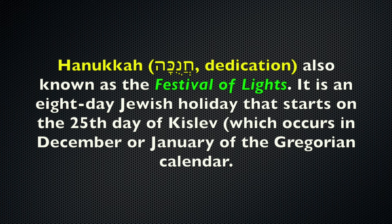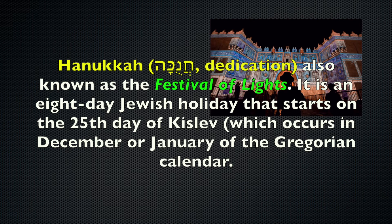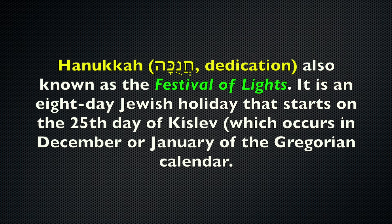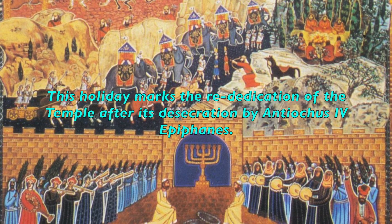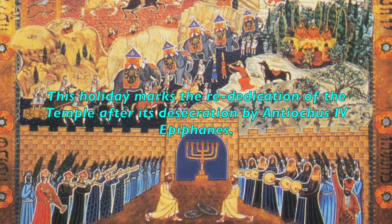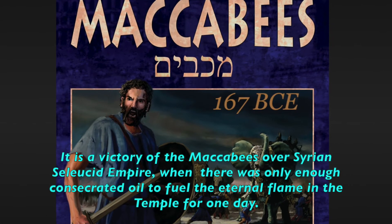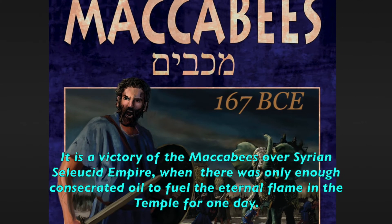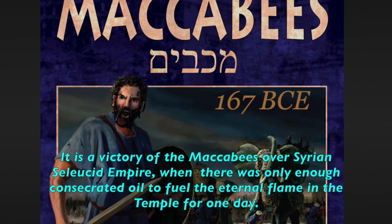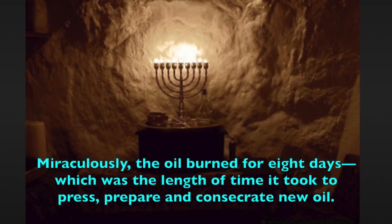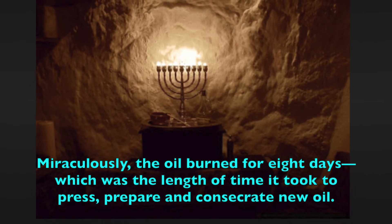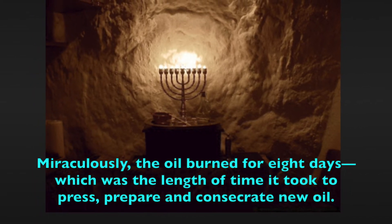Hanukkah, meaning dedication in English, is also known as the festival of lights. It is an eight-day Jewish holiday starting on the 25th day of Kislev, occurring in December or January of the Gregorian calendar. It marks the rededication of the temple after its desecration by Antiochus IV Epiphanes. Spiritually, Hanukkah commemorates the miracle of the oil — a victory of the Maccabees over the Syrian Seleucid Empire, when there was only enough consecrated oil to fuel the eternal flame in the temple for one day, but miraculously the oil burned for eight days — the length of time it took to press, prepare, and consecrate new oil.